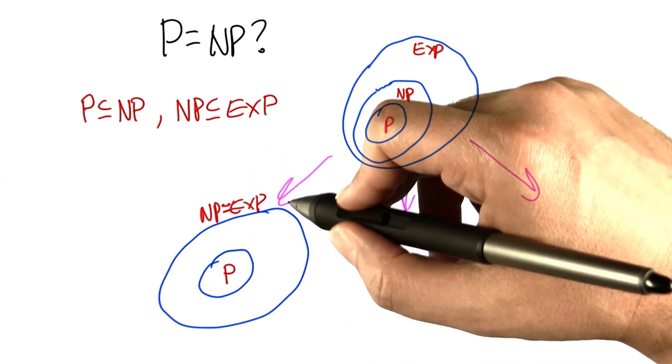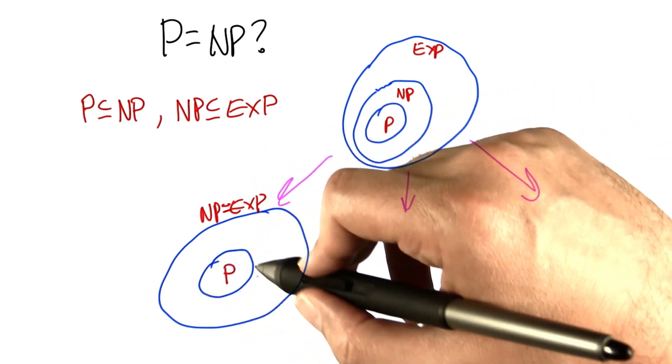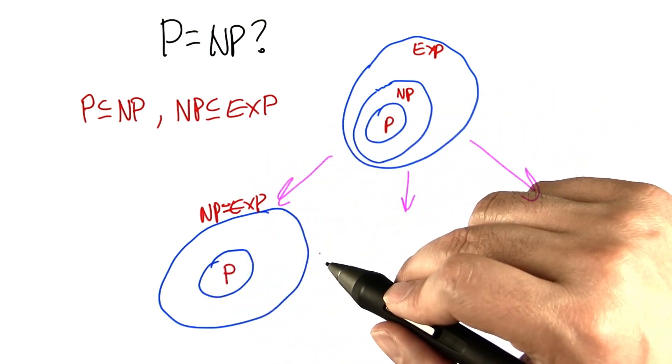So, there's this sort of outer set, and that's distinct from this inner set, which is the set of problems that are solvable in polynomial time.